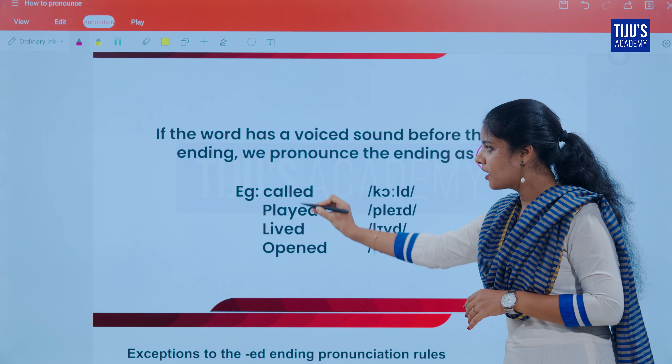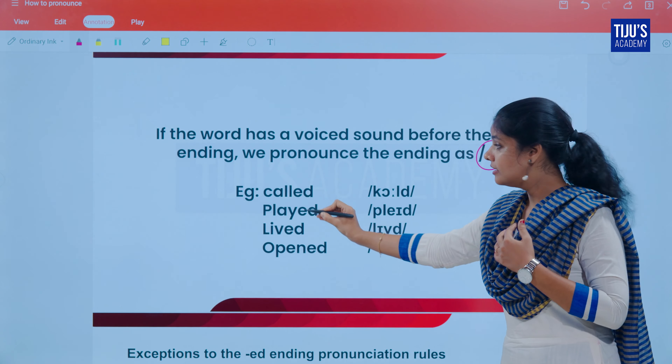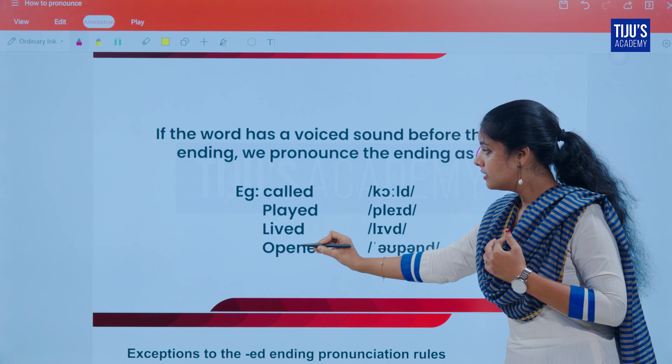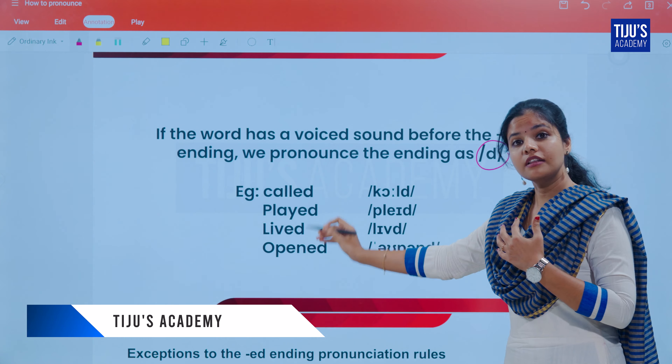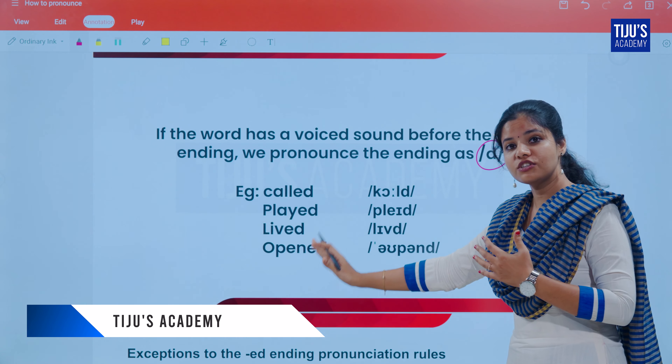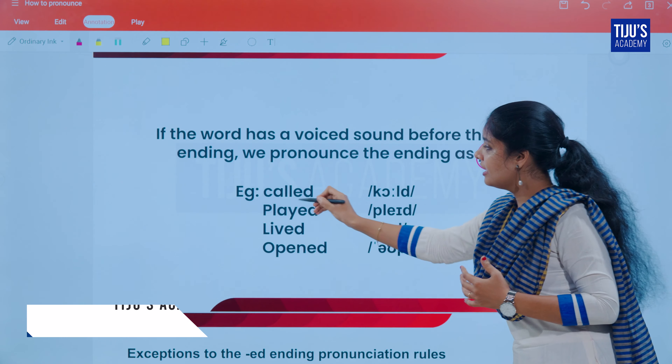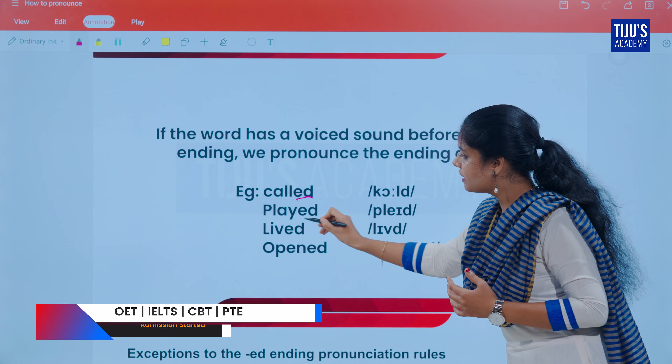The voiced sounds include letters like L, Y, V, and N — when the vocal cords vibrate and produce these sounds before the ED ending, all of those words follow the voiced rule and use the /d/ sound.